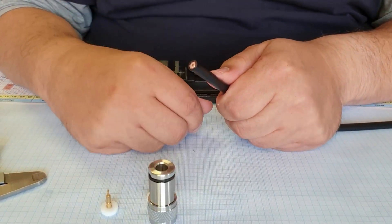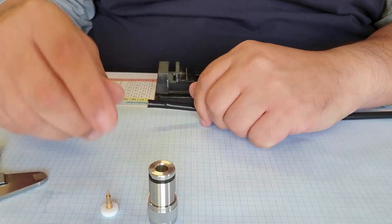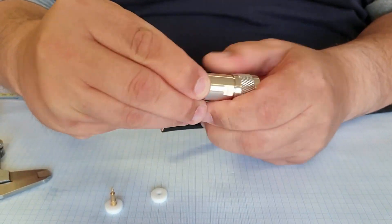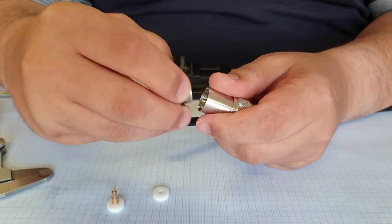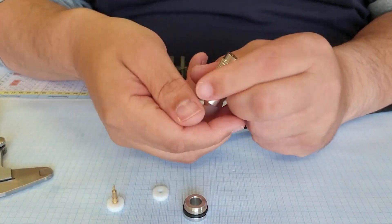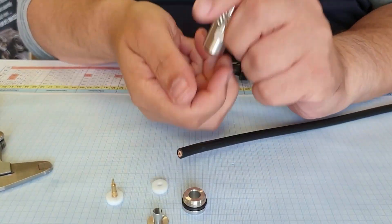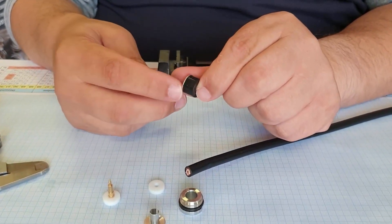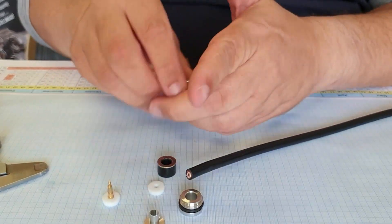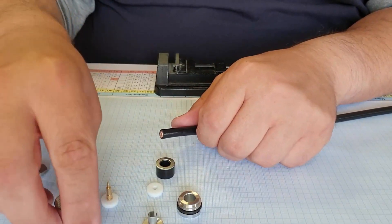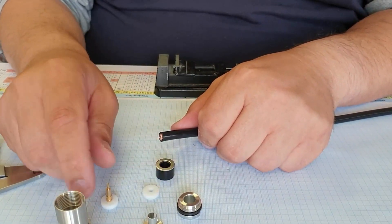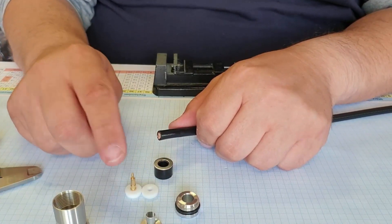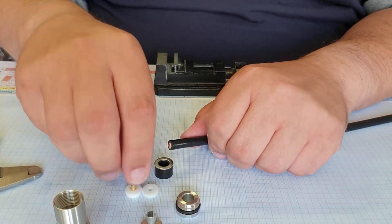First of all, we have to check the connector - is everything in place, is everything here? So we have the screw, the clamp, the little sealing rubber and a washer. We also have the connector and two washers of PTFE, which is Teflon, and of course the middle contact.